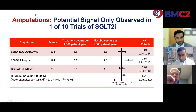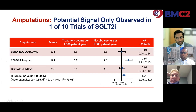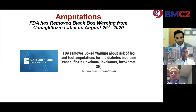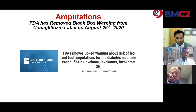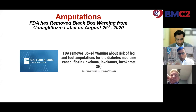Amputations was an early concern that is no longer a major concern. A potential signal was identified in the CANVAS trial with about a two-fold increase in lower limb, specifically toe, amputations, but this was not seen with any other therapy including in a follow-up trial of canagliflozin in high-risk CKD patients. In August of last year, the FDA actually removed that black box warning against canagliflozin. We still recommend not initiating in patients with active peripheral artery disease, an active foot lesion still healing, or while on IV antibiotics, but once out of the acute phase, these high-risk patients still benefit from these therapies.